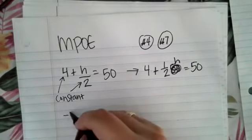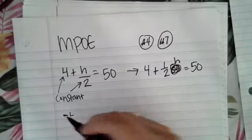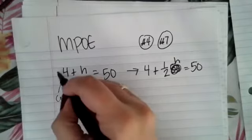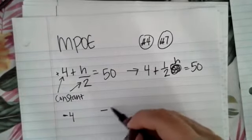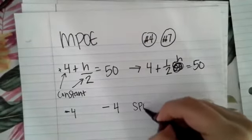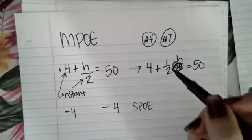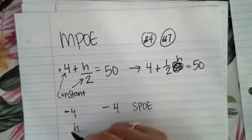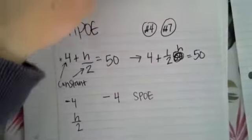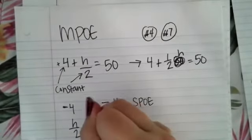So we're going to get rid of 4 by subtracting it. We're going to do the opposite of what's being done. It's a positive 4, so we're going to subtract it away. So if we subtract 4 from both sides of the equation, we're using that subtraction property of equality. We're going to get H over 2 is equal to 50 minus 4 is 46.